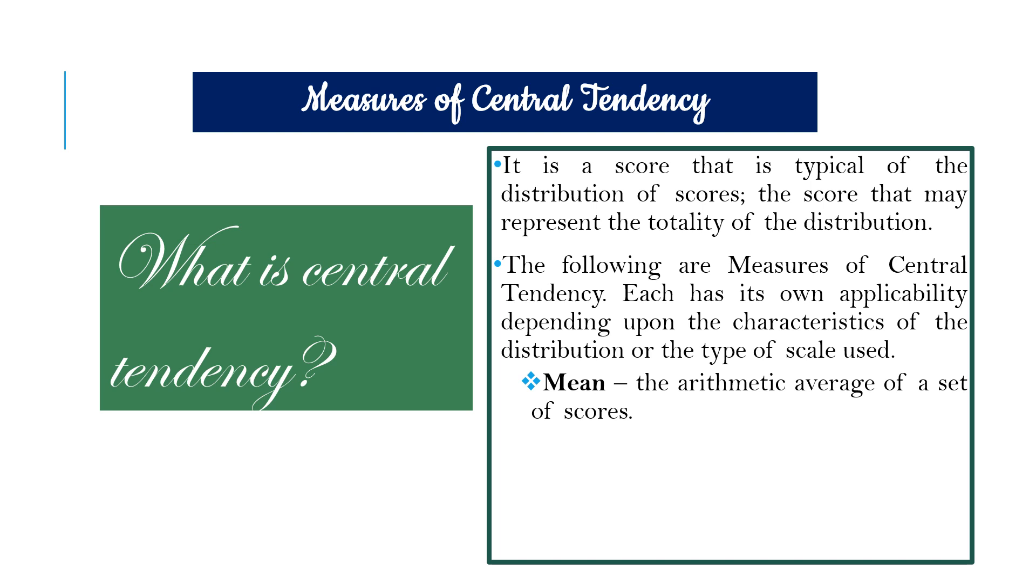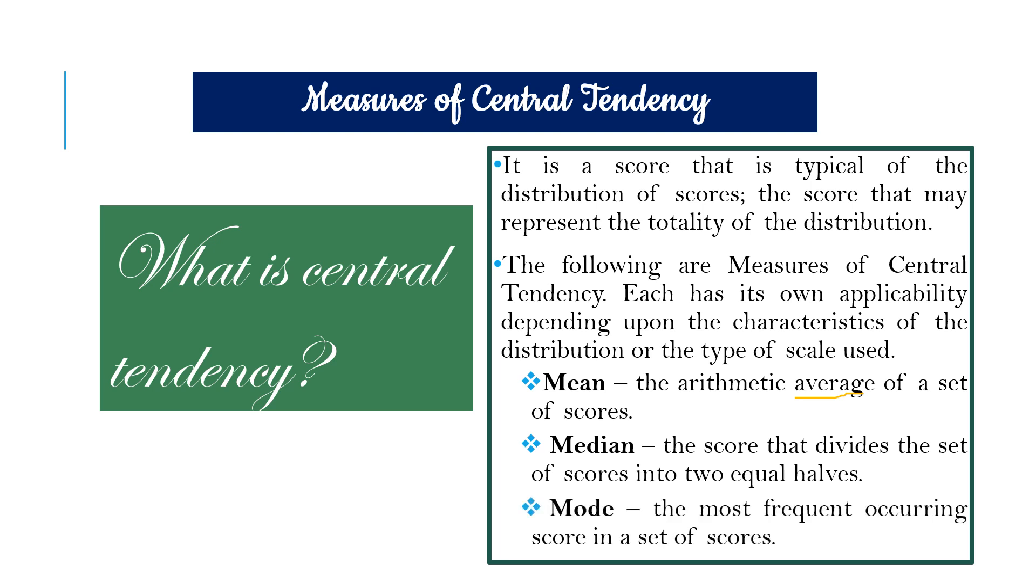The first one is mean or the arithmetic average of a set of scores. The second one is median, the score that divides the set of scores into two equal halves. The next one is the mode which refers to the most frequent occurring score in a set of scores. Take note of those three as we solve for mean, median, and mode of ungrouped data.